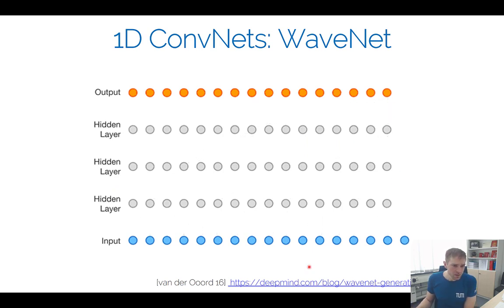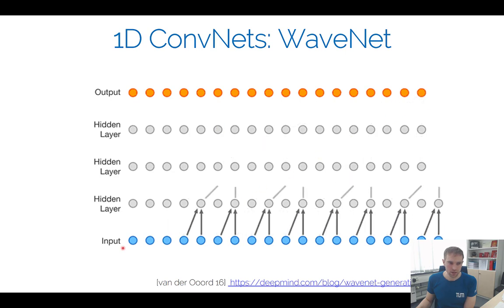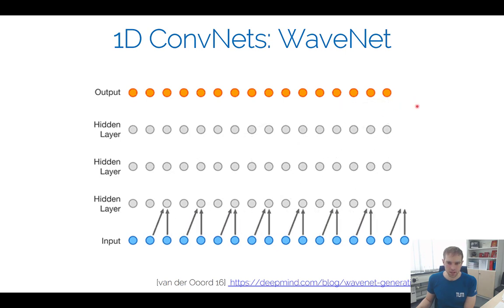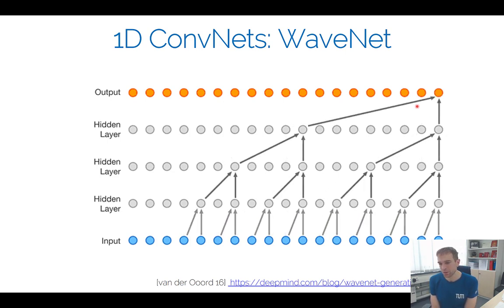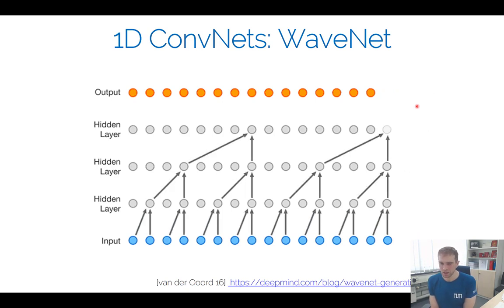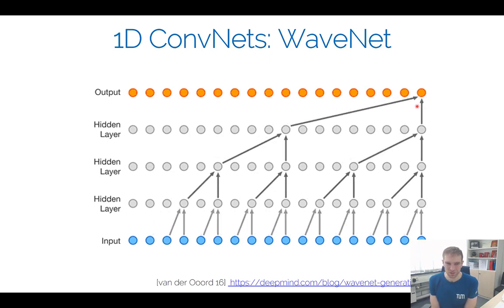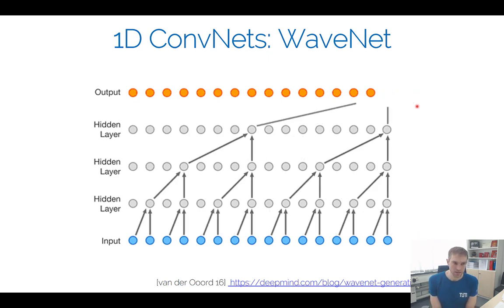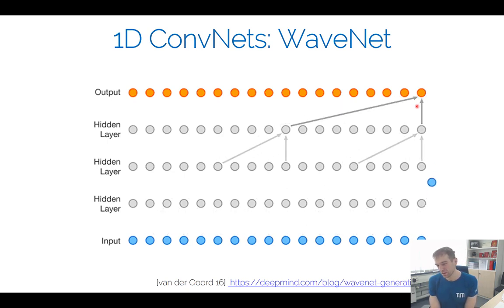In practice, WaveNet works by having some input, a bunch of hidden layers, and generating sample by sample — every sample generated is one forward pass through the network. As you can imagine, it's pretty slow. I think they had something like 90 minutes of processing for a few seconds of audio. There are parallel versions of WaveNet and ways to cache it efficiently at runtime, and it's also relatively slow to train, but there are better versions now that can do this faster.